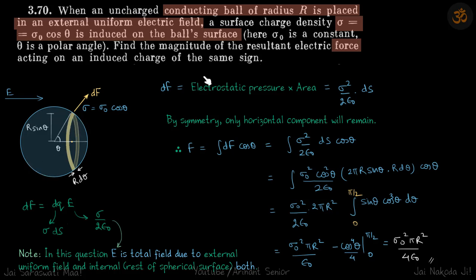The charge density is given as sigma equals sigma-naught cos theta. As you move up, cos theta increases and the value of charge density decreases, becoming zero at the top. Maximum positive charge is accumulated on the right and maximum negative charge on the left, with zero charge at the top and bottom.